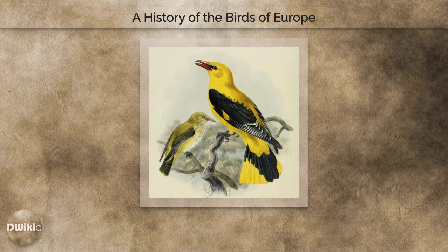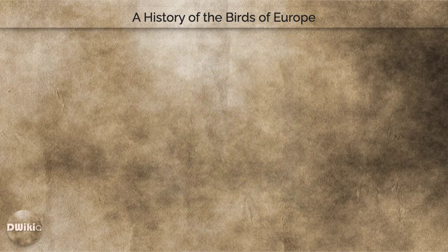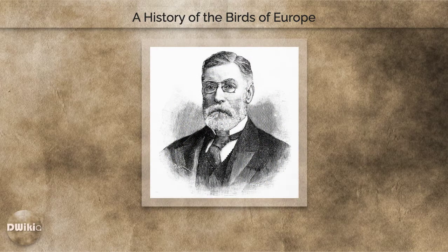The Birds of Europe was published as 84 quarto parts, each typically containing 56 pages of text and eight plates of illustrations, the latter mainly by the Dutch artist John Gerard Keulemans, and bound into volumes when all the parts were published. 339 copies were made, at a cost to each subscriber of £52.10.